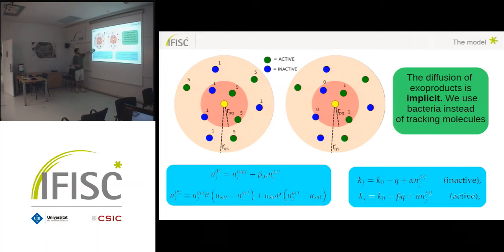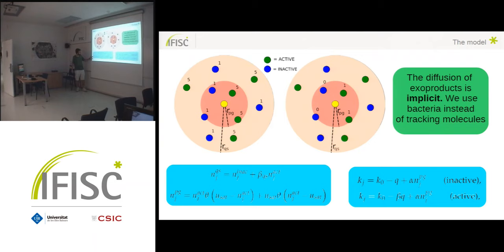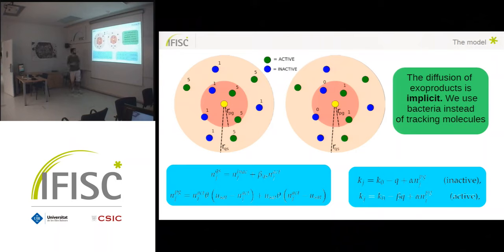For the signal, we count everybody inside this detection area and weight them differently because inactive and active individuals have different rates of production. For the public good, we only count active individuals since they are the only ones producing it. We have added Heaviside functions in the mathematical expression for the detection of the public good because the public good has a limit on the benefit it can provide — it has a saturating behavior that we approximate as linear then saturating.